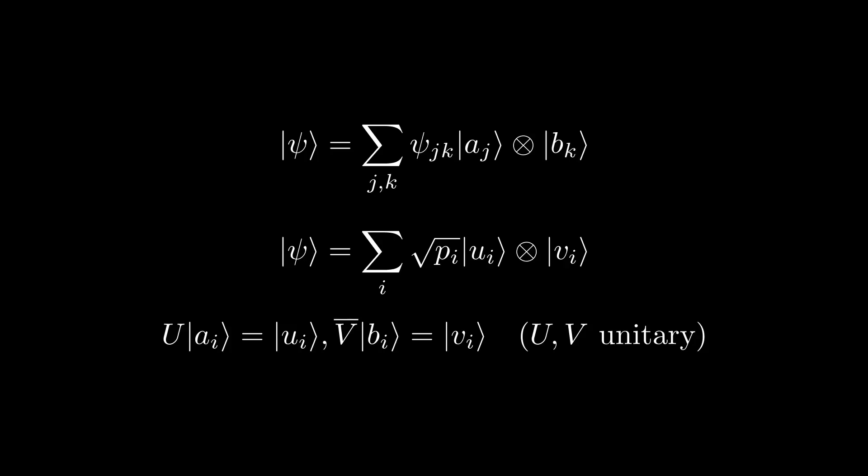All that being said, you are probably wondering how we even compute the Schmidt decomposition for a given pure state. Well, to understand this, let's again go back to our generic expansion in the orthonormal bases, which we will specify as A and B. Suppose we want to express our state as the following Schmidt decomposition in terms of the U and V orthonormal bases. We know that there exist unitaries U and V such that U maps AI to UI and V bar maps BI to VI respectively.